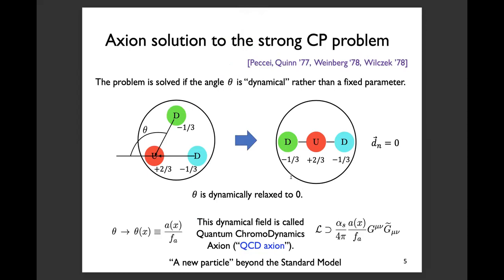An elegant solution to this problem was proposed long ago by Peccei, Quinn, Weinberg, and Wilczek. The problem is solved if the angle theta is dynamical rather than a fixed constant. If theta is some flexible dynamical variable, then it seems very plausible that the quarks spontaneously align so that quarks of opposite charge face each other, making the neutron EDM zero. Indeed, it can be shown that the potential for theta has a minimum when theta is zero, so theta is dynamically relaxed to zero. This dynamical field is called the quantum chromodynamics axion — the QCD axion.